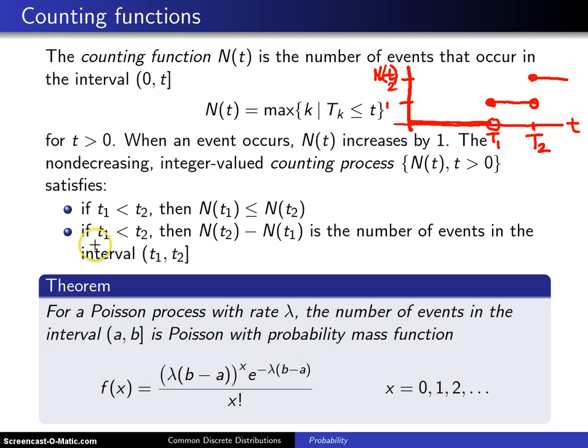Now, the second thing that's true, if you also pick a t1 that is less than t2, then the interpretation of N(t2) minus N(t1), that is the number of events that occur in the interval (t1, t2].